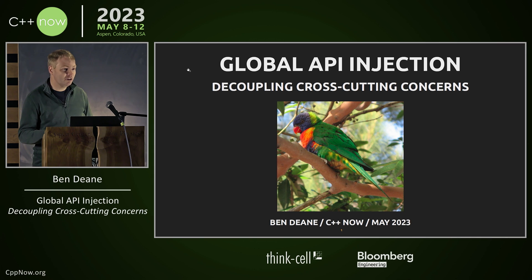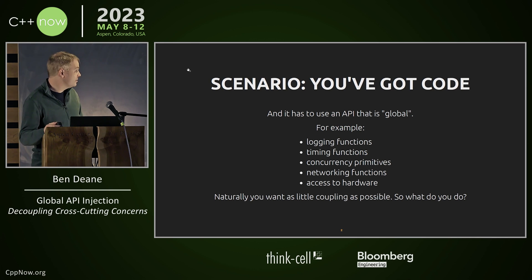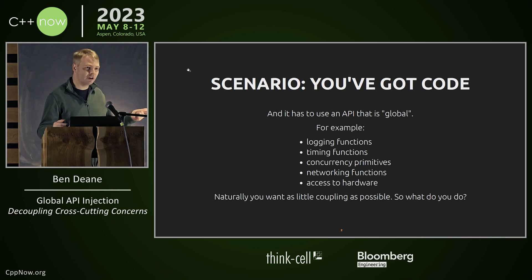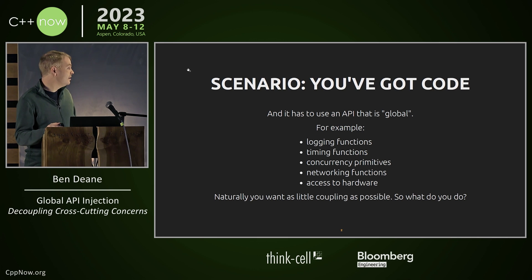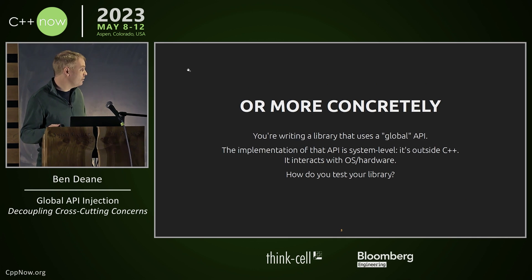I want to share with you a technique that I discovered through necessity, which I don't think is widely used. We've all got some kind of code that represents a platform-level global API — logging functions, networking functions, timing functions. Most people in this room have some kind of functions like this, and you want to use them without coupling. So what do you do?